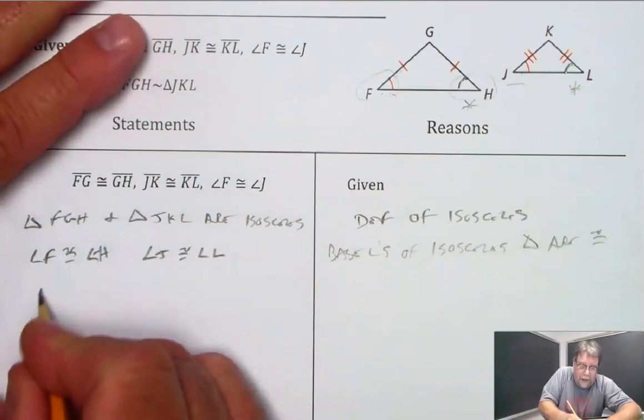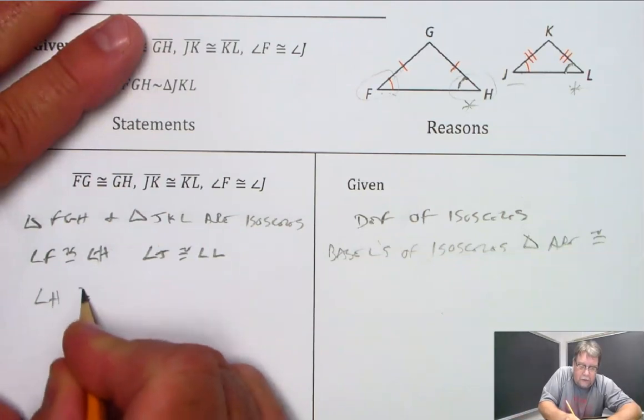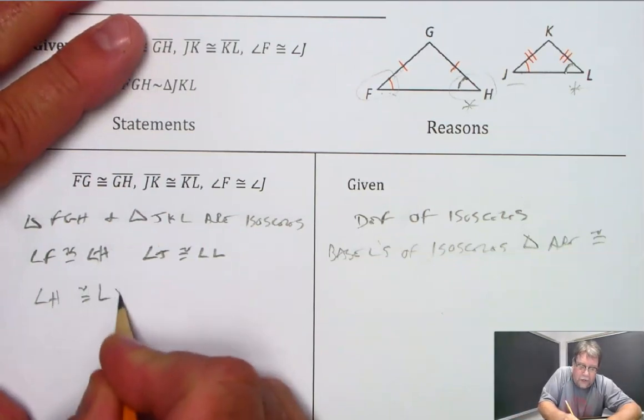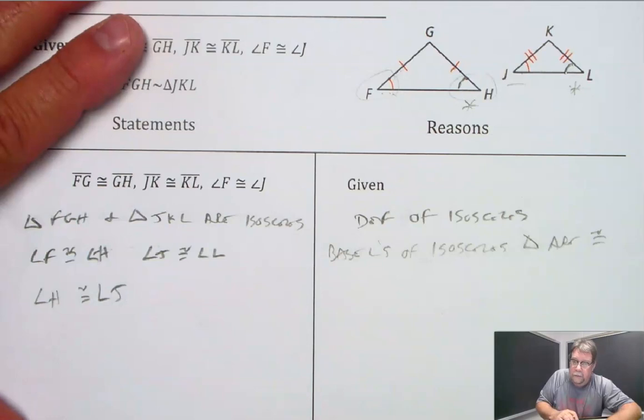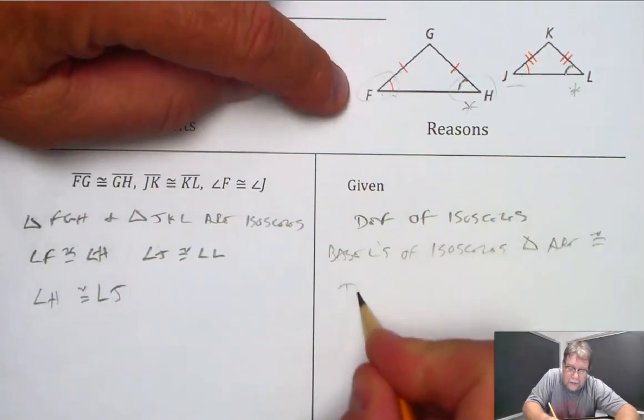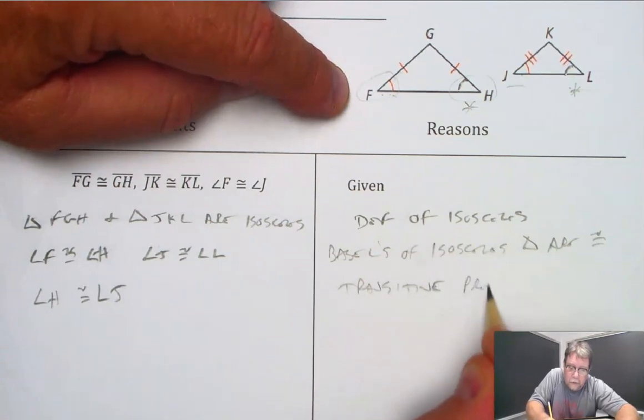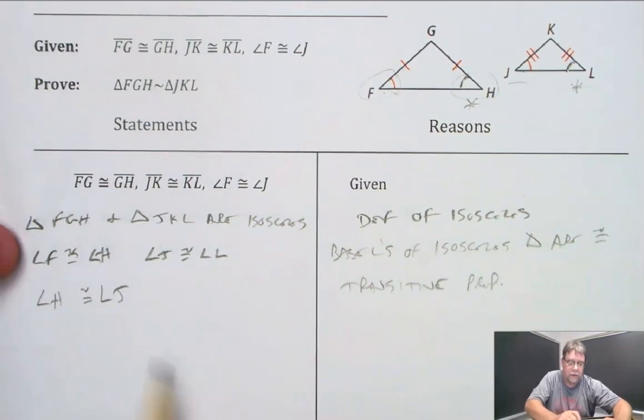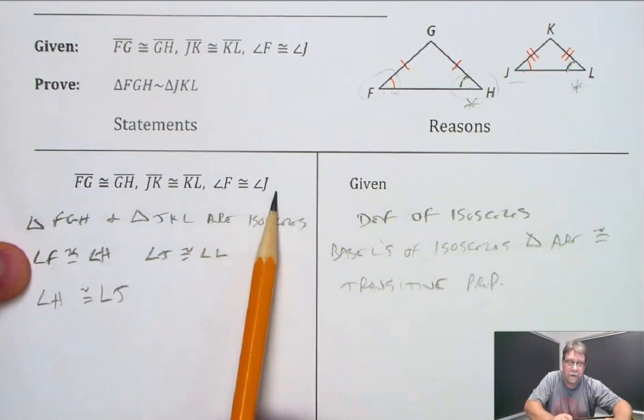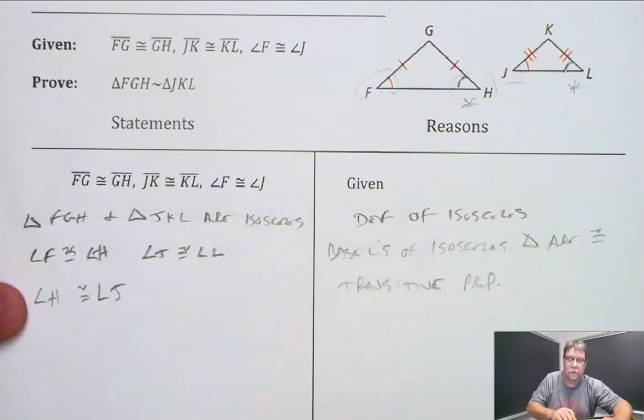I'm going to write that angle H is congruent to angle J. And the reason I'm going to say that is because of the transitive property. Angle F is congruent to angle H, and angle F is congruent to angle J. Therefore, angle H is congruent to angle J.